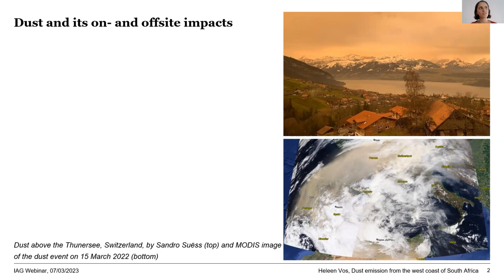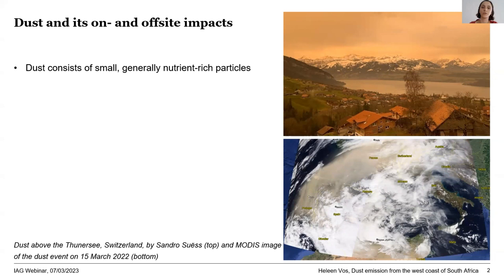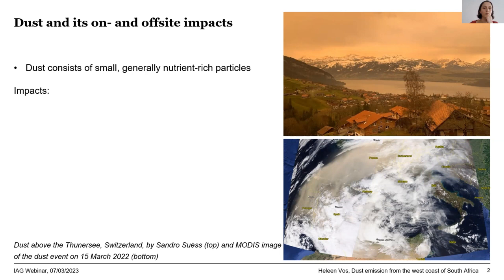Dust may be less of a topic in Western Europe, but it is still relevant — most of you can remember seeing dust clouds traveling over the continent, which is dust coming from the Sahara. Dust is interesting because it consists of small but generally very nutrient-rich particles. The emission, transport, and deposition of these nutrient-rich particles can have big impacts. One important impact for the emitting area is that dust can play a role in land degradation, as the removal of nutrients and fines depletes the land.